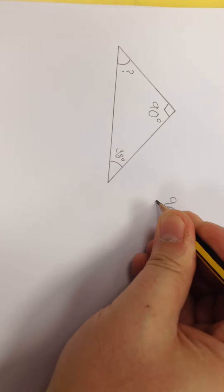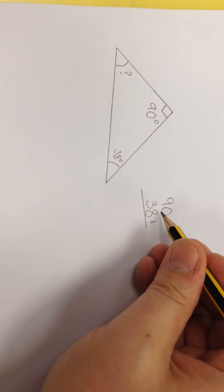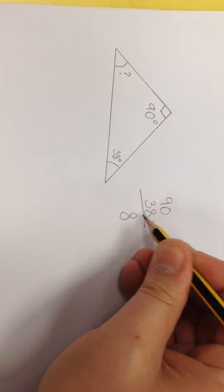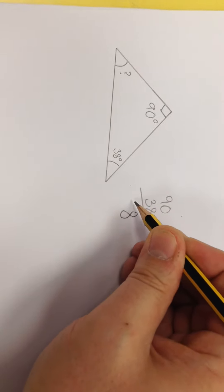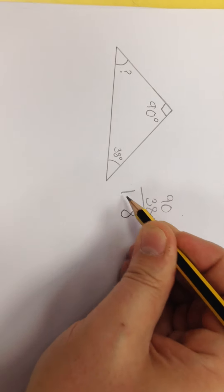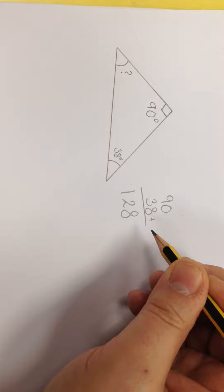So I have my 90 degrees, my 38 degrees. Add those together. 0 and 8 is 8. 9 and 3 is 9, 10, 11, 12. So it's 128 altogether.